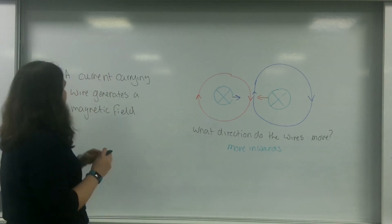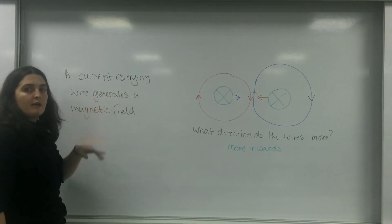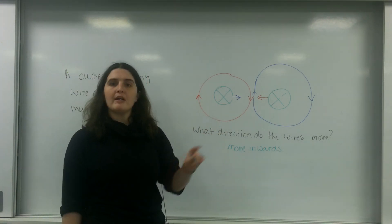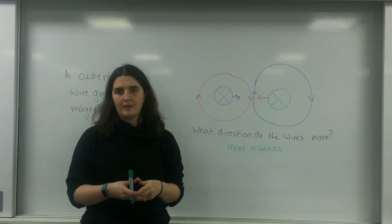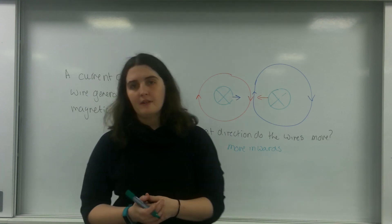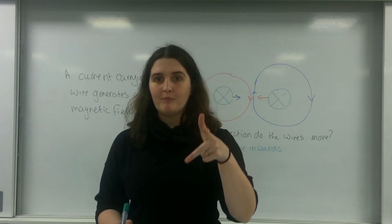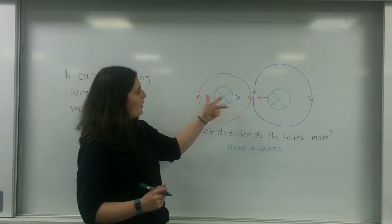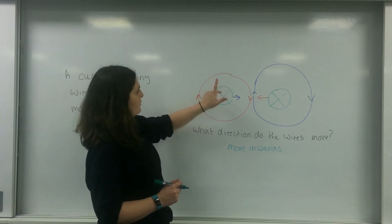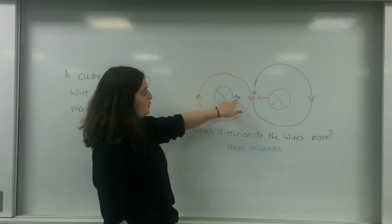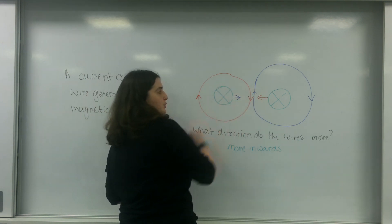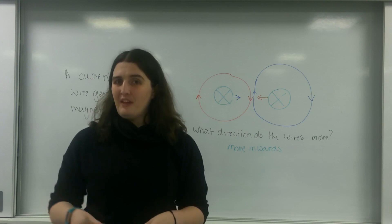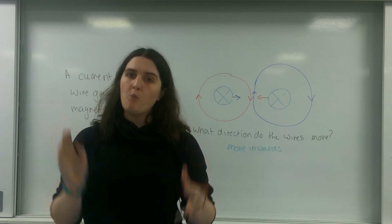This all happens because a current-carrying wire generates a magnetic field, and another current-carrying wire experiences that field. When an object experiences a magnetic field, use Fleming's left-hand rule to work out the force on it. Using the force, field, and current relationship, I worked out the force directions due to the blue and red fields, and both wires move inwards. That covers magnetic fields in wires — both a straight wire and a solenoid.